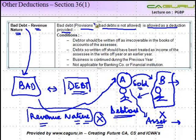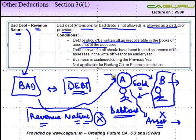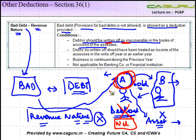So bad debts — provision for bad debts is not allowed. Provision for bad debt is nothing but a provision created in the books that, in case B does not pay up, then what. What is allowed as a deduction is provided the debt should be written off as irrecoverable in the books of accounts of the assessee. So before A can claim a deduction for this debt, he needs to write off the amount receivable in the books from B — you have to show the balance of B as nil.